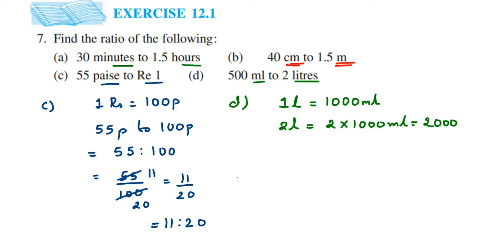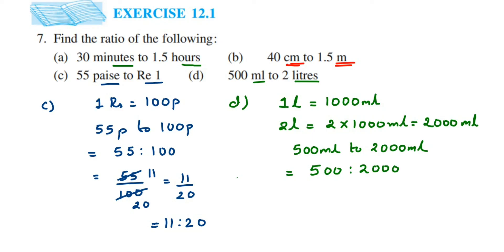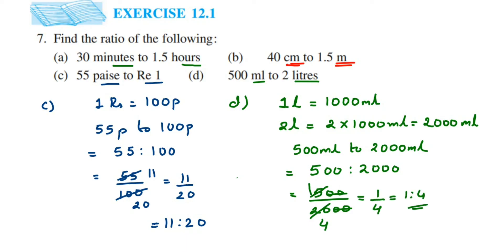So we have 500 milliliters to 2000 milliliters. Now finding out the ratio — we do not write the unit — so it is 500 is to 2000. Converting to a fraction: 500 divided by 2000. Cancel the two zeros from each side, and we get 5 by 20. Cancel in the 5 times table — 5 ones and 5 fours — so we get 1 by 4, which is equal to 1 is to 4. The ratio is 1 is to 4.